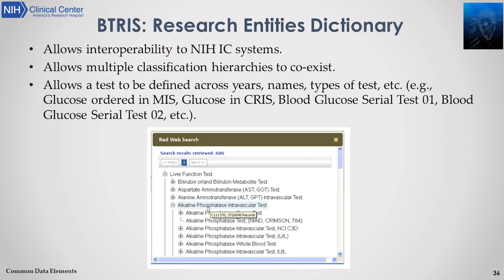Betris is based on the Research Entity Dictionary, referred to as REDD. It allows interoperability across NIH IC systems, allows multiple classifications and hierarchies to coexist, and allows tests to be defined across years, names, and type of test. For example, a glucose order is identified consistently based on the same reference range and instruments — glucose in CRIS, our current EHR, across various types of ordering, would all be identified as the same test. Below is the REDD web search, where you can search for specific items, know the values, and by clicking through, find values across the entire repository. This is an example of common data elements specific to the NIH intramural program.